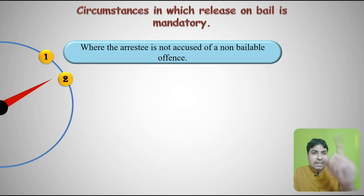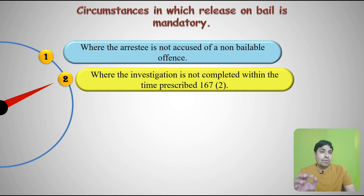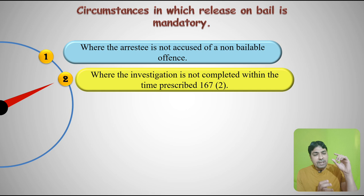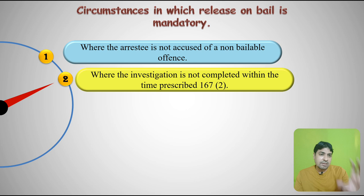The second circumstance is where the investigation is not completed within the prescribed time under section 167 sub-clause 2. If in a serious offence the investigation is not completed within 90 days and the accused is in jail, after 90 days the accused can claim bail as of right. In a less serious offence, if the investigation is not completed within 60 days — that is, the charge sheet is not filed — and the accused is in jail, they can claim bail as of right.